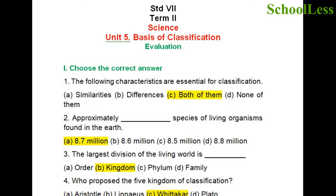Question 2: Approximately dash species of living organisms are found on earth. The right answer is 8.7 million. Therefore, choice A is the right answer.